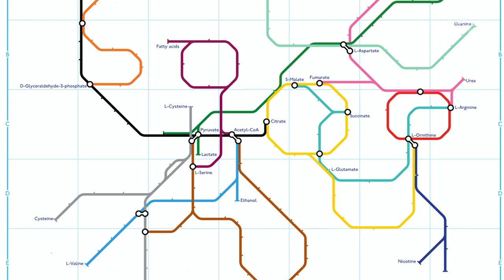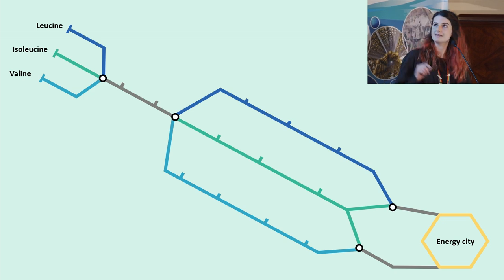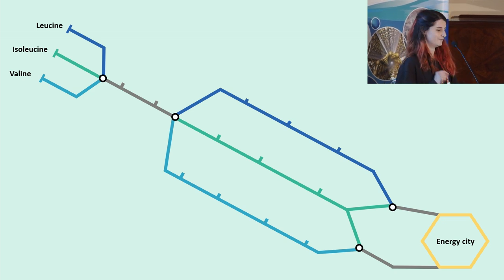But like a train network, it doesn't always run smoothly. So let's zoom into one part of the network that concerns three amino acids called leucine, isoleucine, and valine.